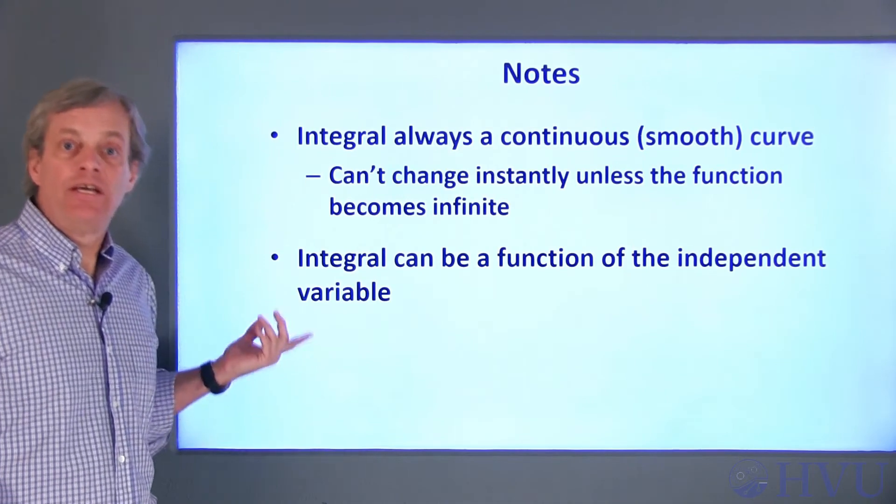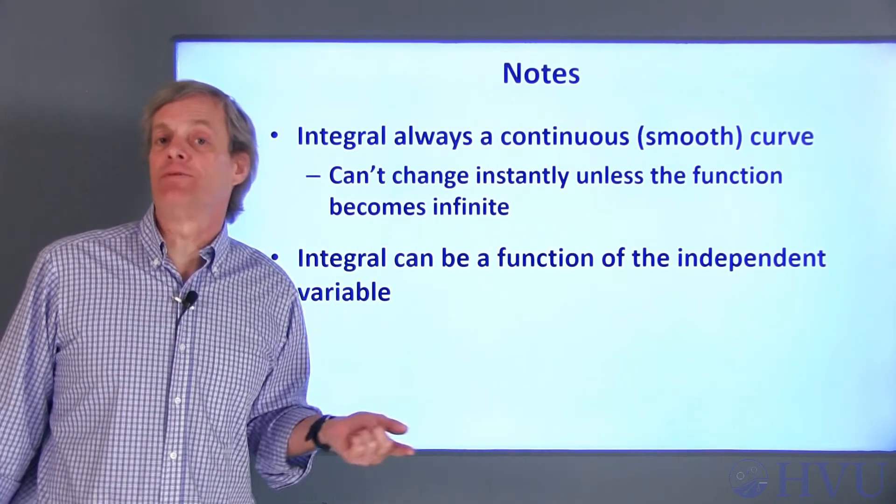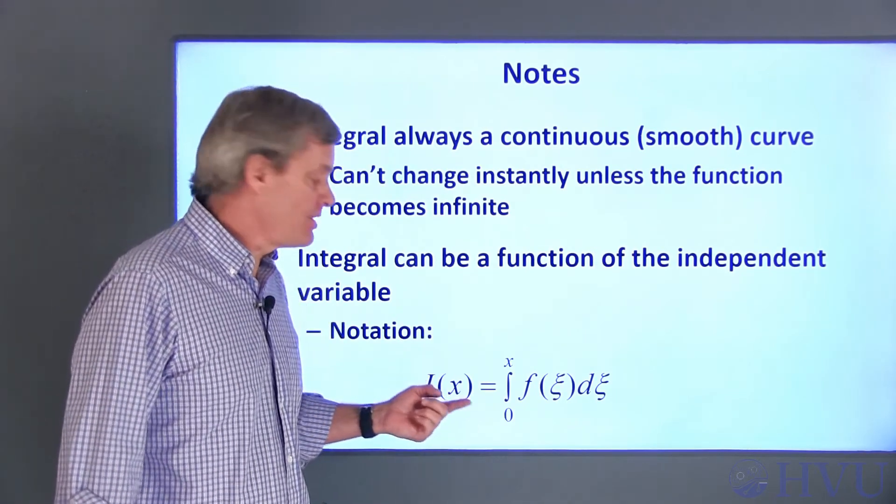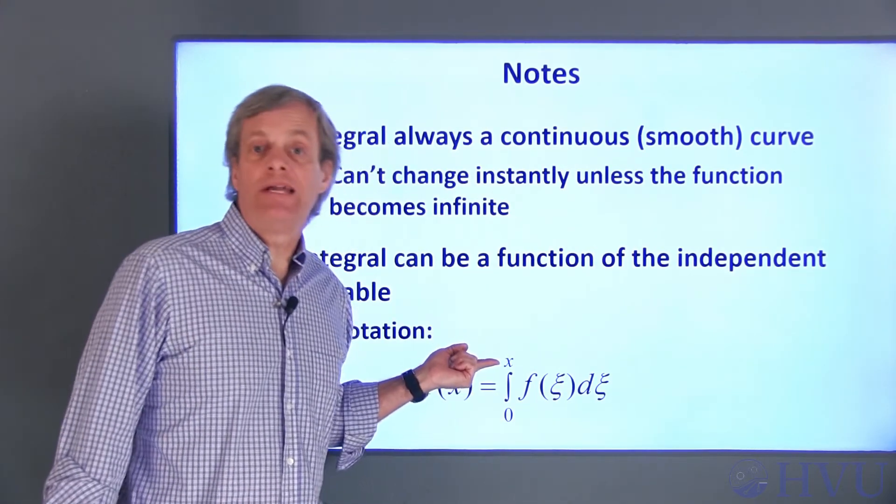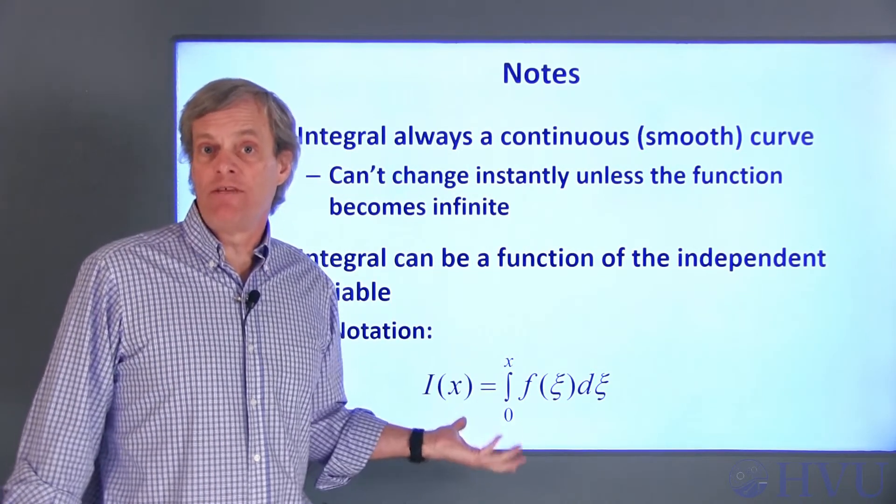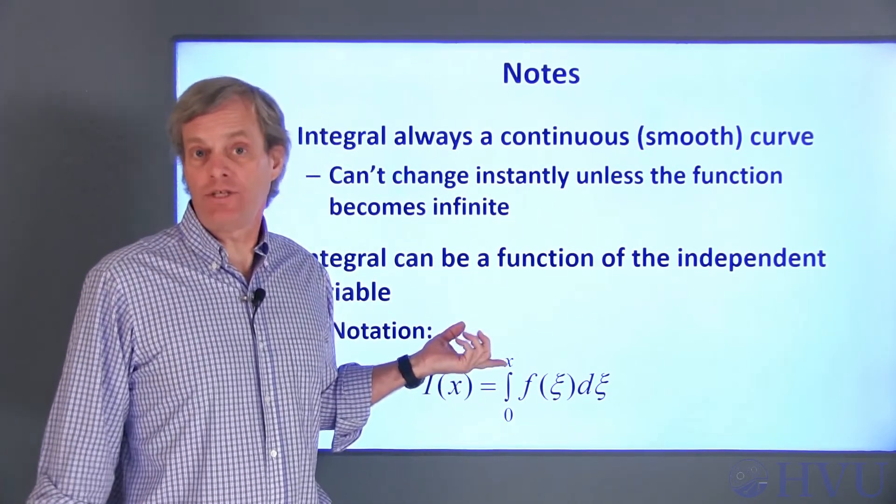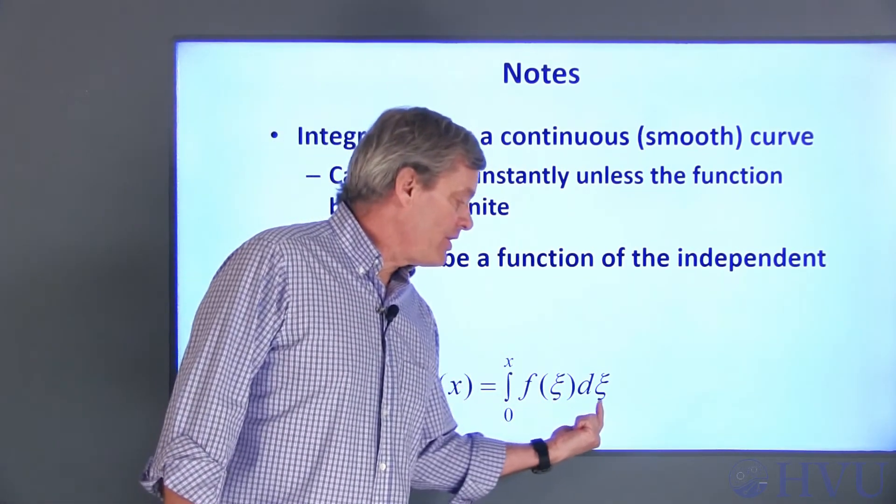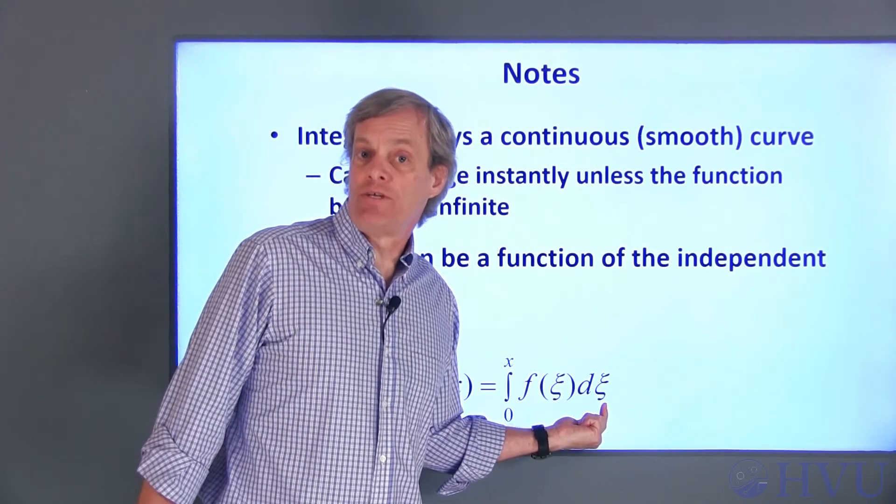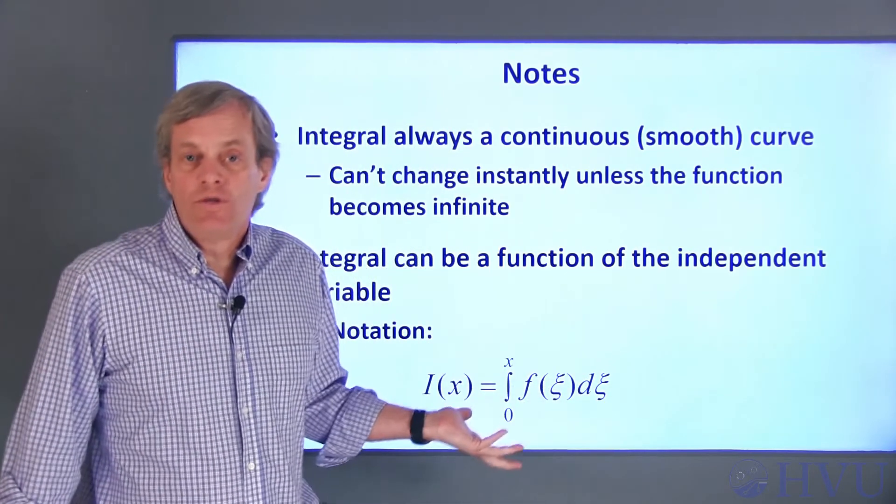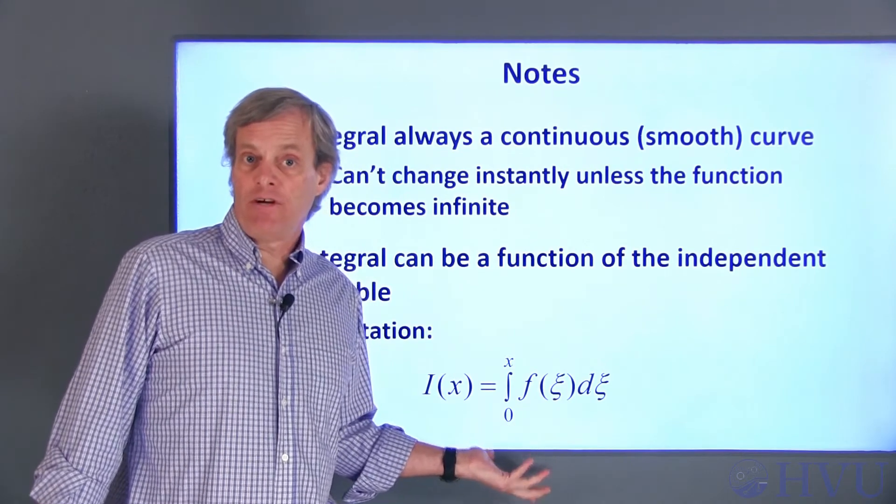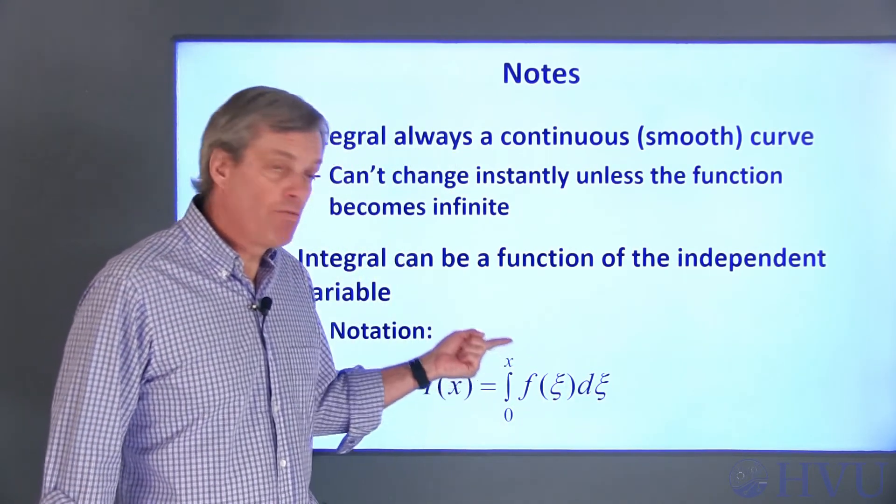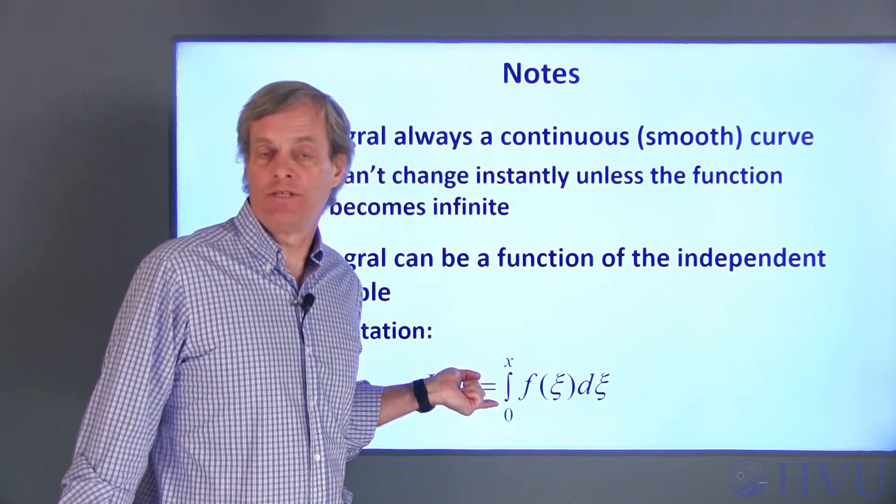As with derivatives, integrals can be a function of the independent variable of the function. For example, I can integrate a function between zero and some arbitrary point x. This will give the area under the curve between zero and x, which, of course, is a function of x. This variable is called a dummy variable of integration for these problems. You simply rewrite the function by replacing the independent variable with the dummy variable, which, in turn, gets replaced with the appropriate variable x when the integral is done.